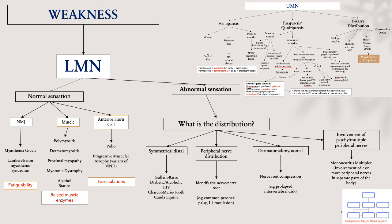A classical example would be a patient presenting with foot drop and sensation loss to the lateral side of the leg — you could be thinking about common peroneal nerve palsy. To differentiate that from an L5 nerve root lesion, you need to ask whether the patient can invert their ankle. Loss of ankle inversion would suggest an L5 nerve root lesion, because in common peroneal nerve palsy you have weakness in dorsiflexion and ankle eversion but are still able to invert.